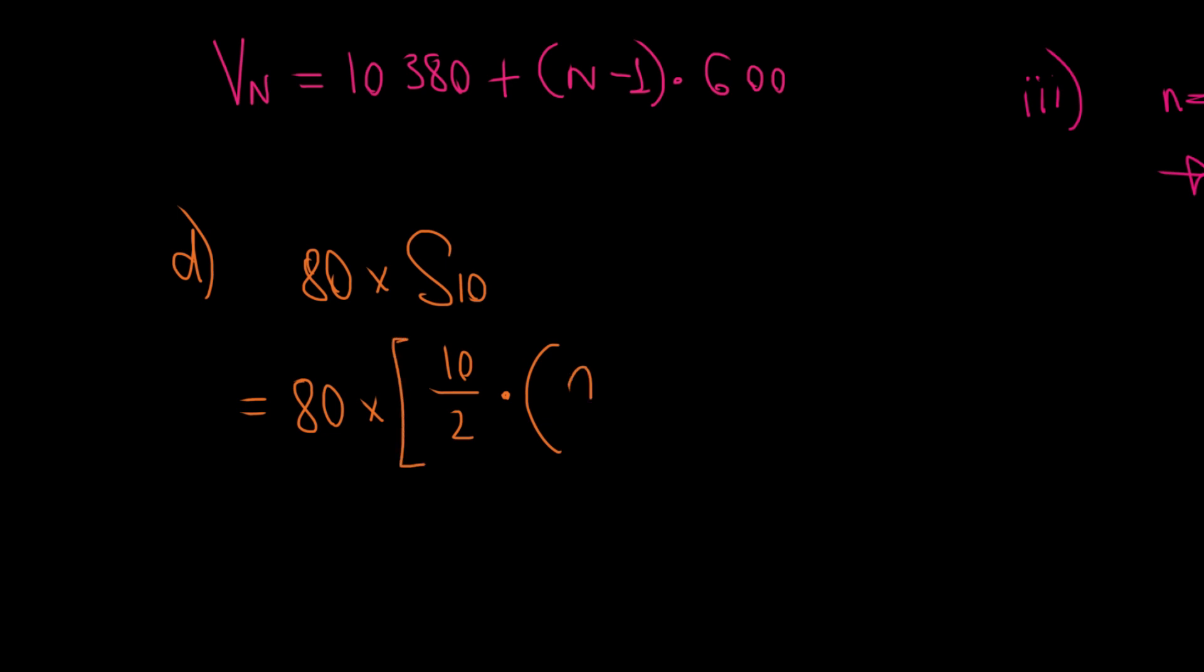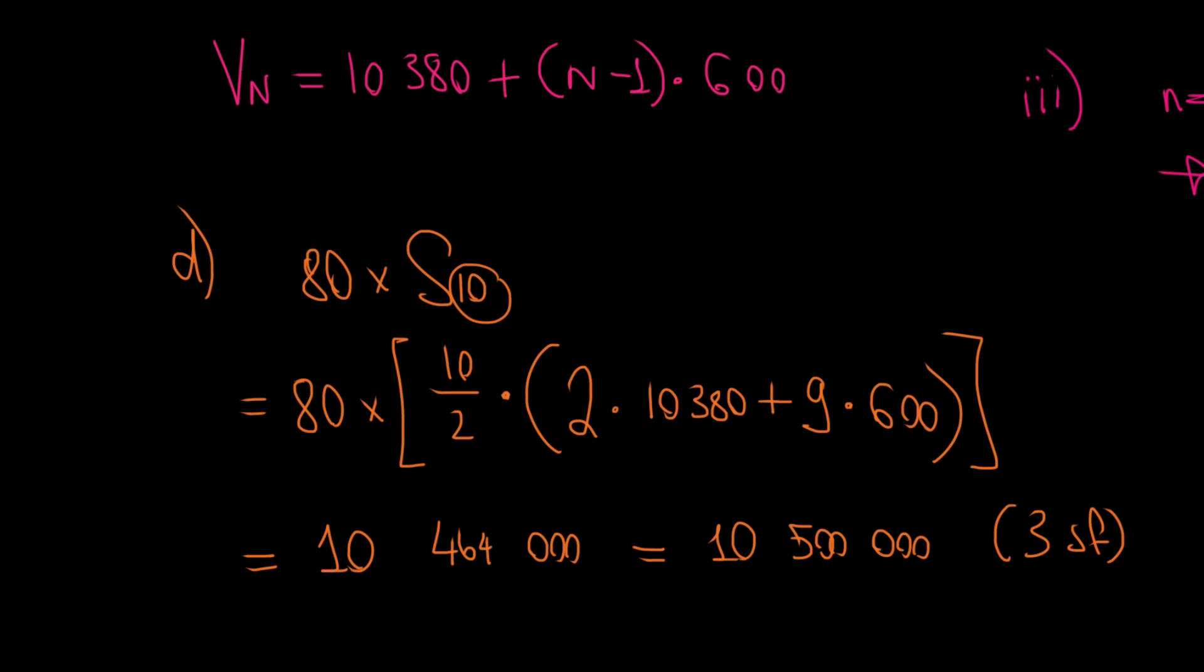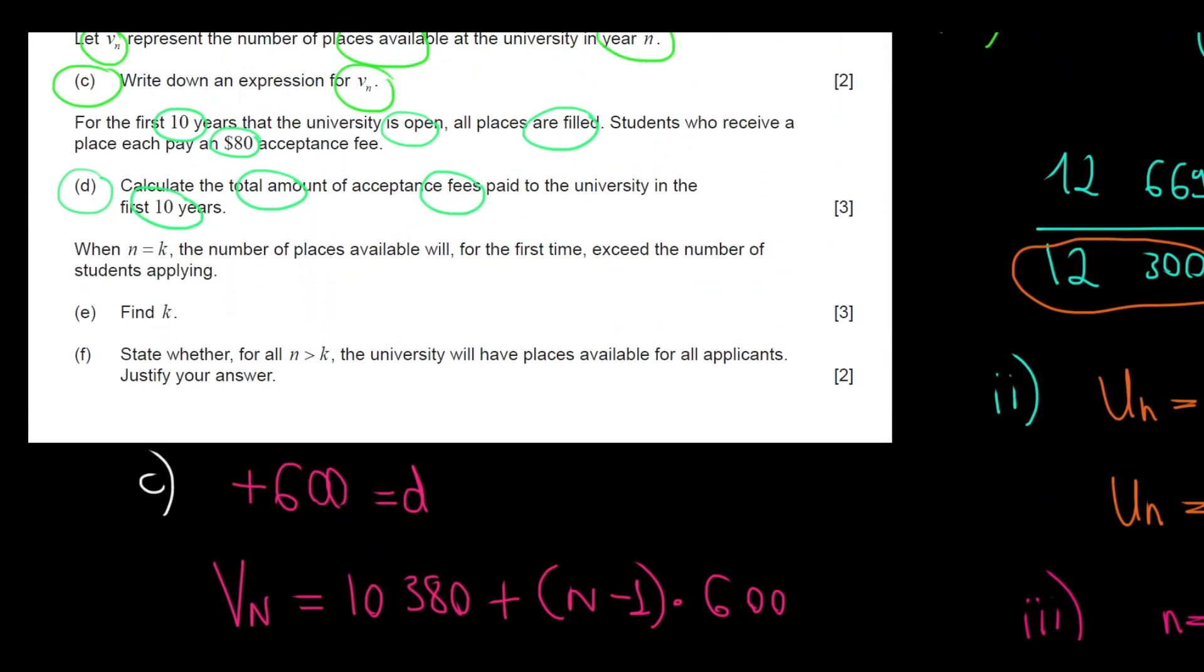And here we will have 2 times the first term. So 2 times 10,380 plus N minus 1, since N is 10, we will have 10 minus 1, 9, multiplied with the difference of 600. We work out all this math on the calculator and we would have $10,464,000, which would be $10,500,000 rounded to three significant figures. Hope this makes sense. And now let's have a look at question E.